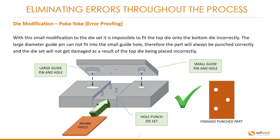Let's have a look at the die modification. With this small modification to the die set, it is impossible to fit the top die onto the bottom die incorrectly. The large diameter guide pin cannot fit into the small guide hole. Therefore, the part will always be punched correctly and the die set will not get damaged as a result of the top die being placed incorrectly.